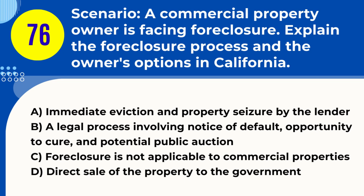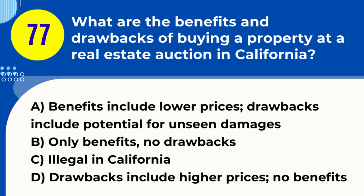Question 76. Scenario: A commercial property owner is facing foreclosure. Explain the foreclosure process and the owner's options in California. A. Immediate eviction and property seizure by the lender. B. A legal process involving notice of default, opportunity to cure, and potential public auction. C. Foreclosure is not applicable to commercial properties. D. Direct sale of the property to the government. Answer: B. Explanation. In California, the foreclosure process for a commercial property owner begins with a notice of default from the lender. The owner then has a period to cure the default, usually by paying the overdue amount. If not resolved, the property may be sold at a public auction. The owner may explore options like loan modification, short sale, or bankruptcy to avoid foreclosure.